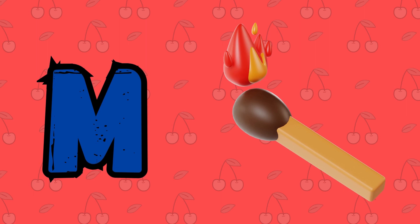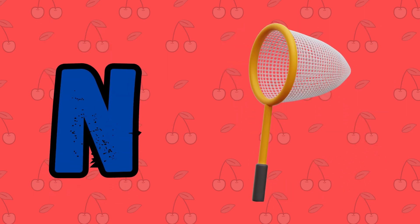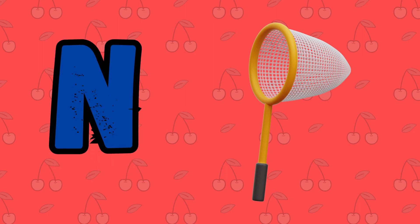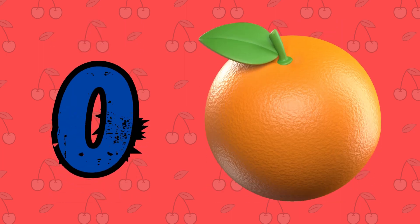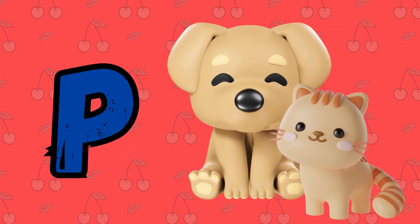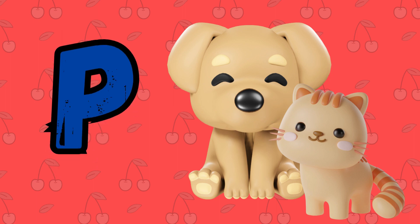M is for mat, m-m-mat. N is for net, n-n-net. O is for orange, o-o-orange. P is for pet, p-p-pet.